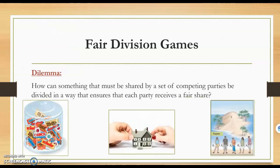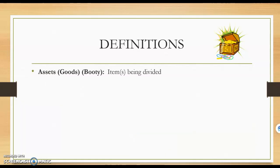The dilemma that we have is: how can something that must be shared by a set of competing parties be divided in a way that ensures that each party receives a fair share? It could be that we're dividing a bag of candy or an estate, but basically we're trying to take that property and divide it so that each party receives a fair share. Before we get started talking about the ways we can do that, let's look at some definitions we're going to need.